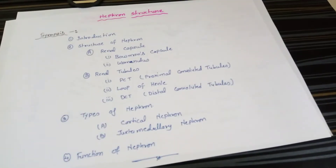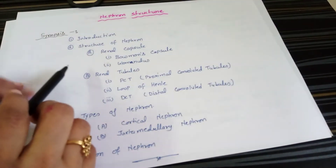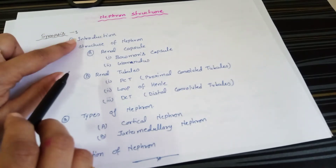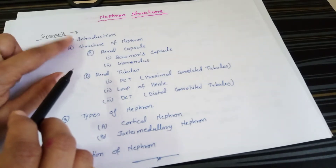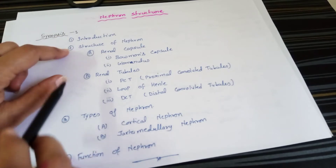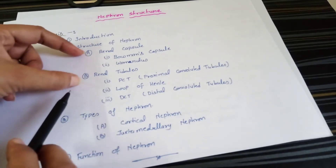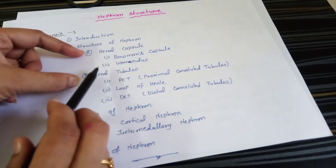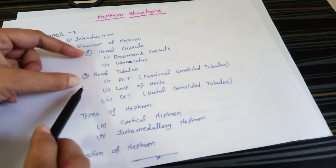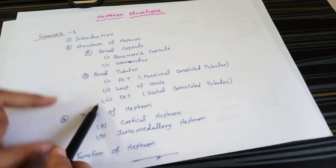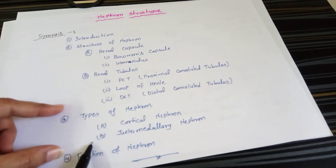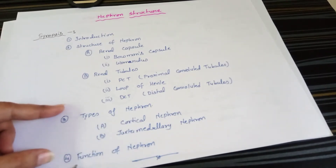In this lecture I will cover: first, the introduction and definition of the nephron; second, the structure of the nephron, which has two parts — the renal capsule and renal tubule. In the renal capsule there are two parts, and in the renal tubule there are three parts: PCT, loop of Henle, and DCT. Third, the types of nephron — cortical nephron and juxtamedullary nephron. Fourth, the function.